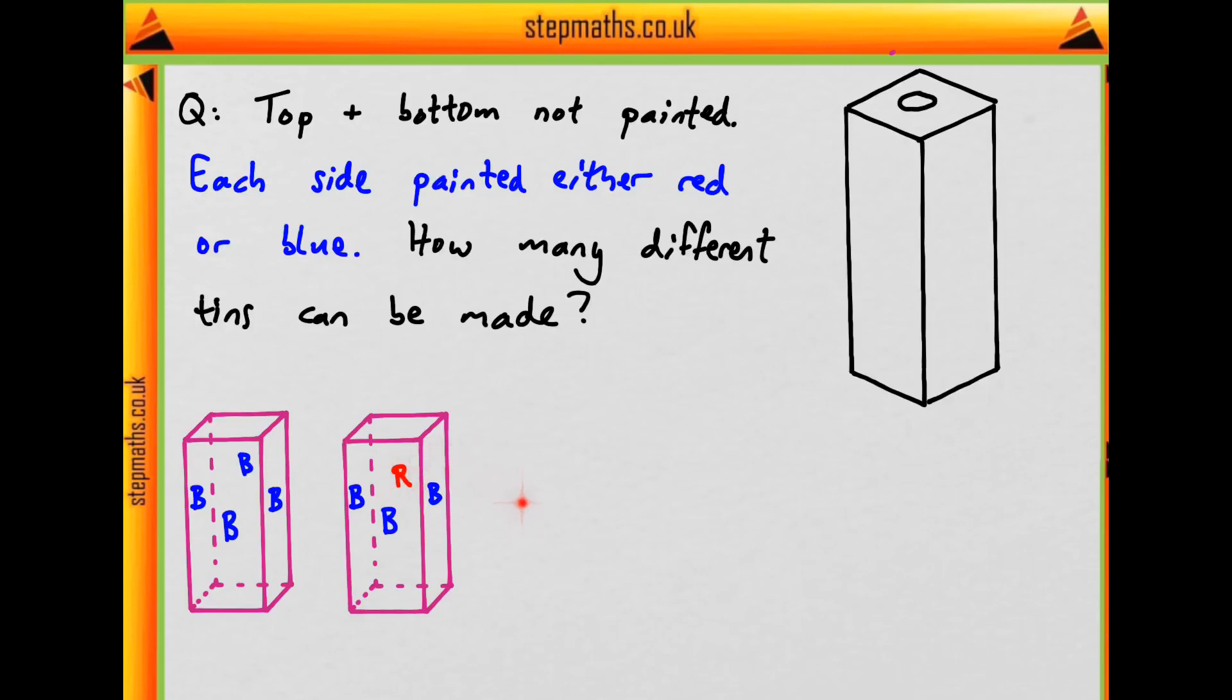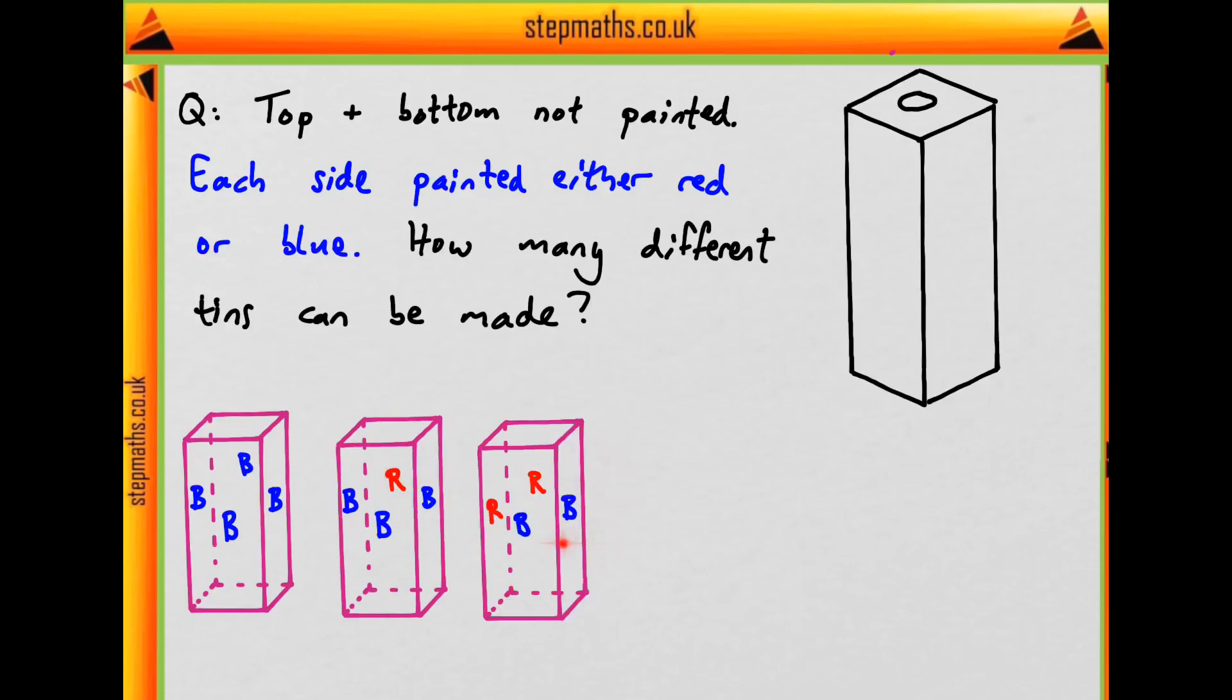Then what about two of each? We can do it like this, where we have the blue sides next to each other and the red sides next to each other. Are there any other ways of having two of each? We could have the blues opposite each other and the reds opposite each other. These are the only two different ways. So that's two more types of tin.